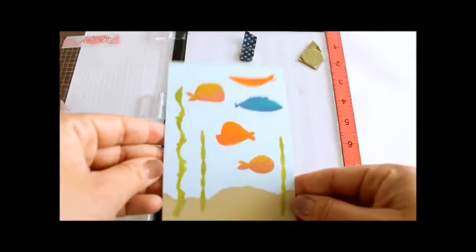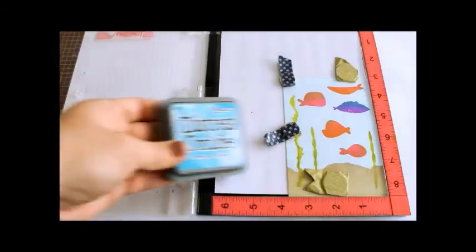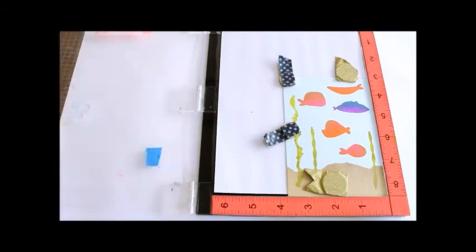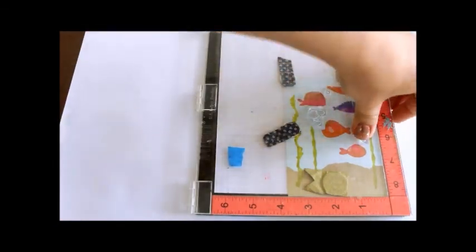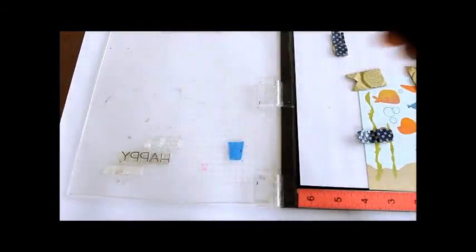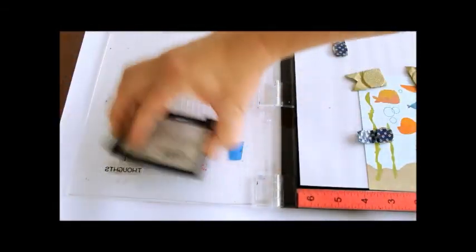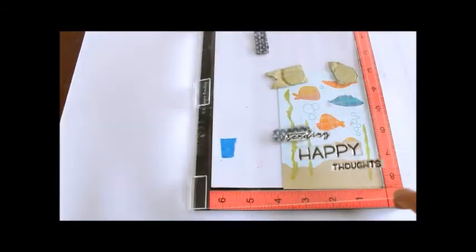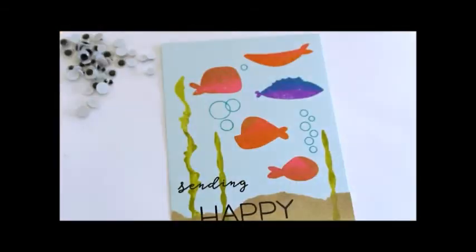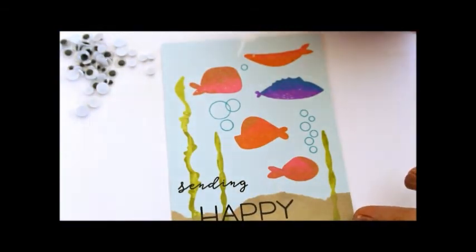And voila, two toned fish. Next I stamped some bubbles with Broken China ink. Then the sentiments using a good intense black ink. I've used Versafine Onyx Black. I used a combination of two stamp sets here, W Plus 9 Be Merry Sentiments and Lawn Fawns Happy Happy Happy.